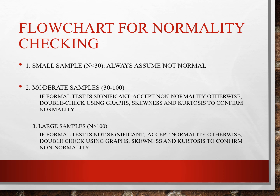For small samples, if your N is less than 30, always assume it's not normal. Moderate samples, 30 to 100 — if the formal test is significant, accept non-normality; otherwise double-check using graphs, skewness, and kurtosis to confirm normality. For large samples, N greater than 100 — if the formal test is not significant, accept normality; otherwise double-check using graphs, skewness, and kurtosis to confirm non-normality.